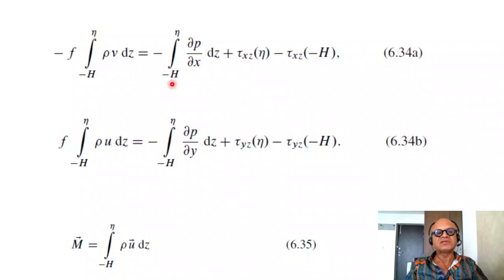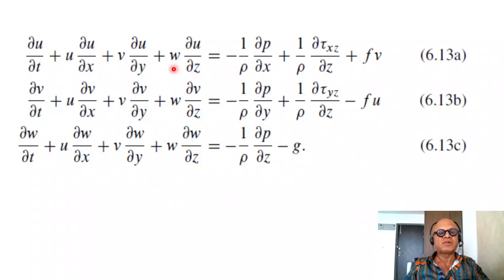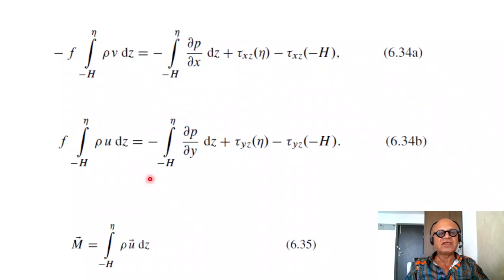So we end up with minus F times minus H to eta rho V dz equal to minus of minus H to eta dp dx dz plus tau xz at eta and minus tau xz at minus H. So there is bottom friction and top friction in the zonal direction. Similarly, we have bottom friction and friction at the surface in the meridional direction and integral of the meridional pressure gradient. So basically, we are dropping the nonlinear terms. This drops out because of the hydrostatic assumption. This drops out because of the steady-state assumption. So we only have these terms and we are integrating these sides set equal to zero on the other side.